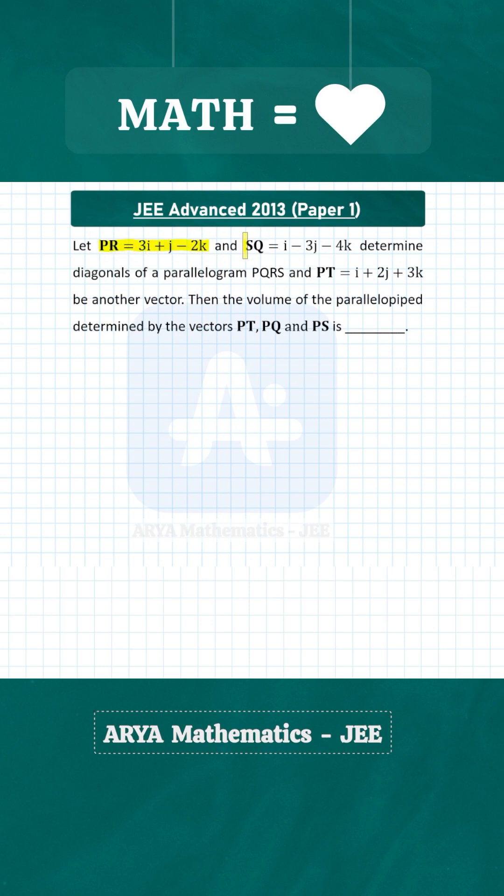Vectors PR and SQ determine the diagonals of a parallelogram PQRS. If PT is this vector, then we have to find the volume of the parallelepiped formed by these three vectors PT, PQ, and PS. Now this is one of the easiest problems from vectors in 3D.